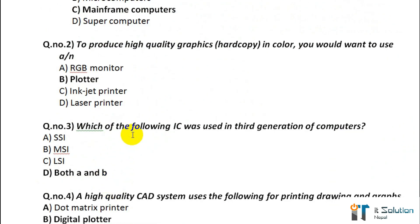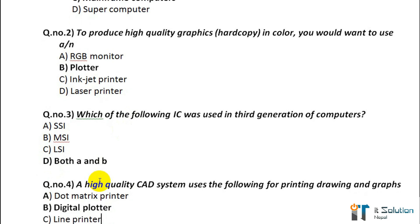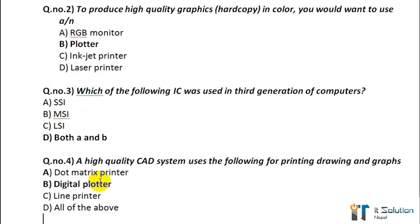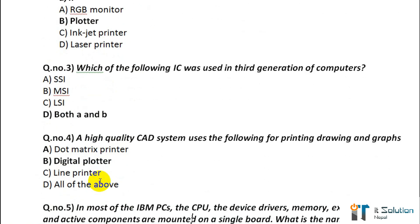Question number 3: Which of the following ICs was used in the third generation of computers? Its correct answer is option D — both A and B. Question number 4: All high quality CAD systems use which of the following for printing drawings and graphs? Its correct answer is a digital plotter.